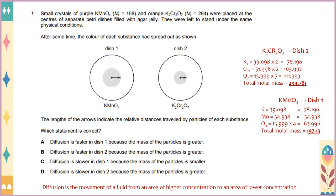Which statement is correct. If you look at dish 2, K2Cr2O7, total molar mass is about 294.18. Meanwhile, for dish 1, KMnO4, total molar mass is about 197.13. Diffusion is actually the movement of a fluid from an area of higher concentration to an area of lower concentration. So what is actually the correct statement here is diffusion is slower in dish 2 because the mass of the particles is greater. The answer will be A.